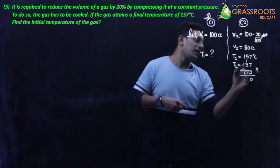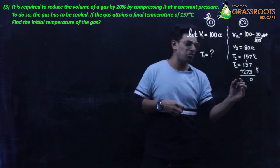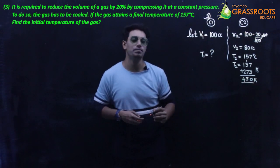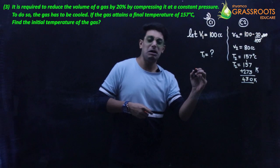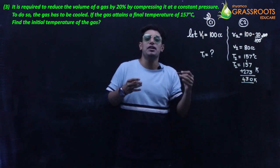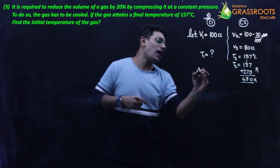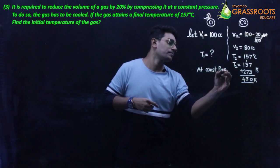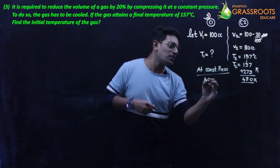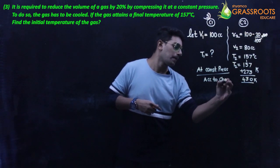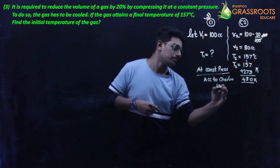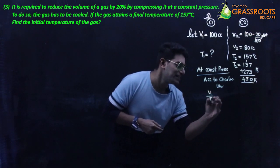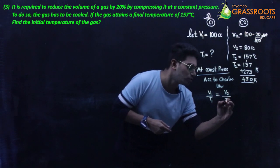So T2 = 430 Kelvin. The gas is at constant pressure, so according to Charles' law, the formula is V1/T1 = V2/T2.